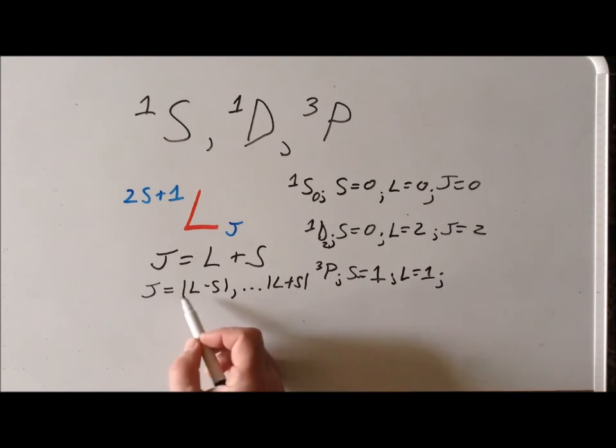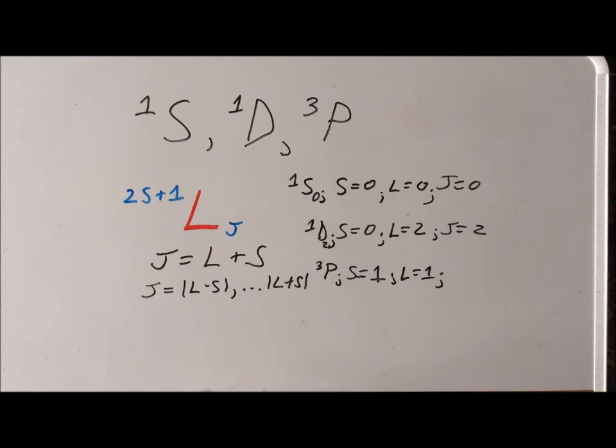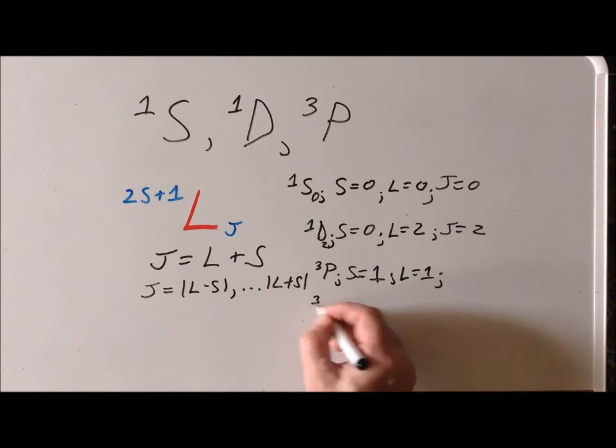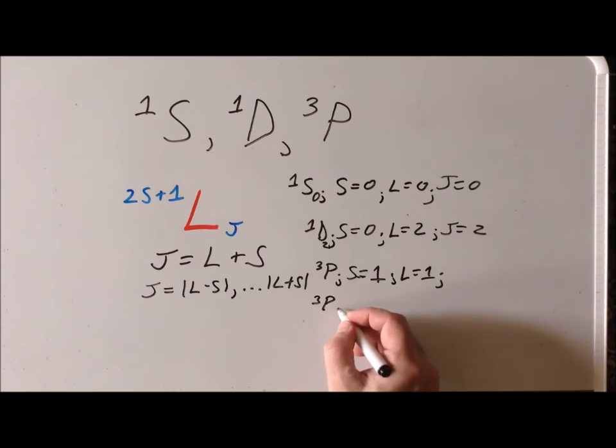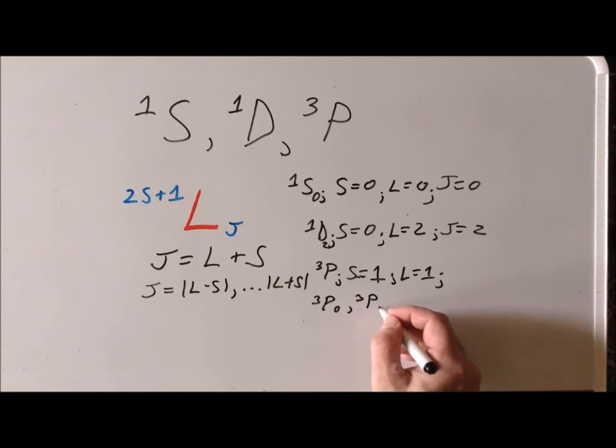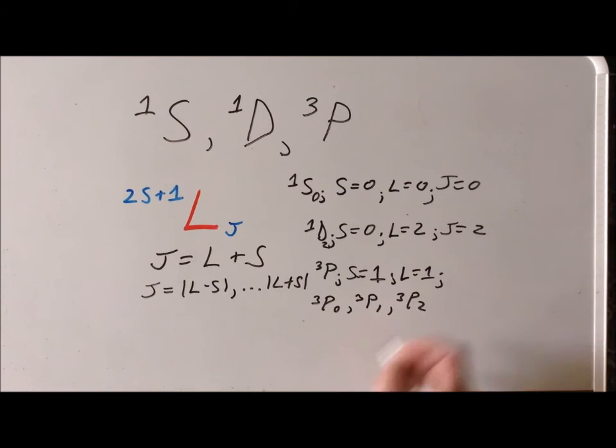So now we actually get something interesting happening in terms of having more than one possible J value. Because if we have L minus S, we have 0. At the upper end, we have S plus L, which is 2, so it's going to be 0, 1, 2. We have three possible J values: triplet P zero, triplet P one, and triplet P two. Now that we've worked out the values of J, we put J as a subscript on the right-hand side, and if we have different values, each of these corresponds to a different exact term symbol.